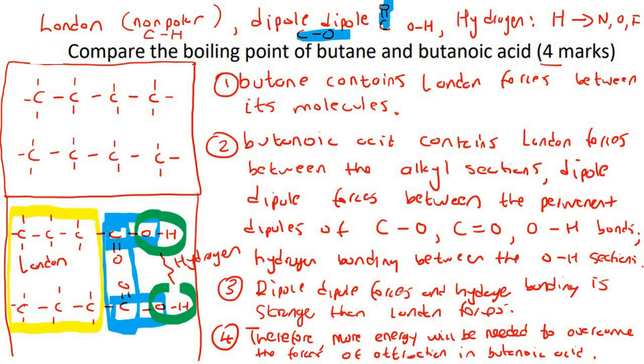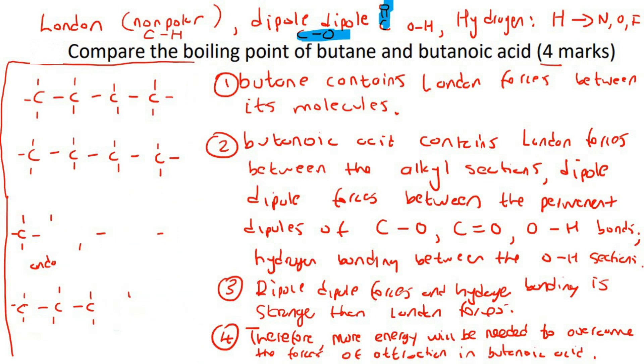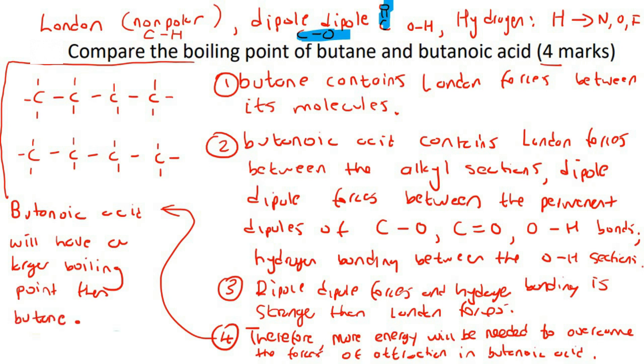Now, we need to add a little extra part, so I'm going to erase all of this. Let's carry on here. Therefore, butanoic acid will have a larger boiling point than butane.